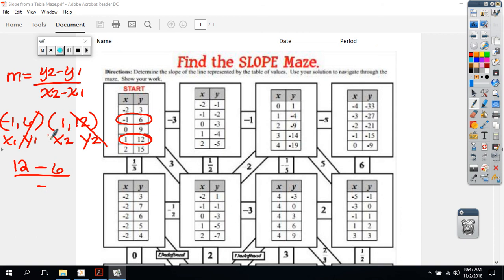Then on bottom, I need my X2. X2 is 1, so that goes here. And I need my X1, which is negative 1. That goes in the bottom right.